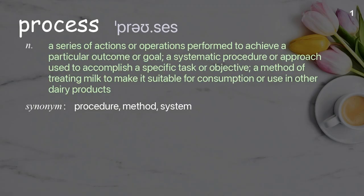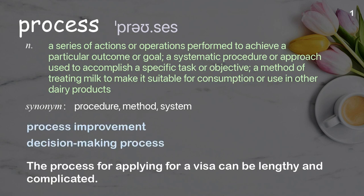Process: A series of actions or operations performed to achieve a particular outcome or goal; a systematic procedure or approach used to accomplish a specific task or objective; a method of treating milk to make it suitable for consumption or use in other dairy products. Examples: process improvement, decision-making process. The process for applying for a visa can be lengthy and complicated.